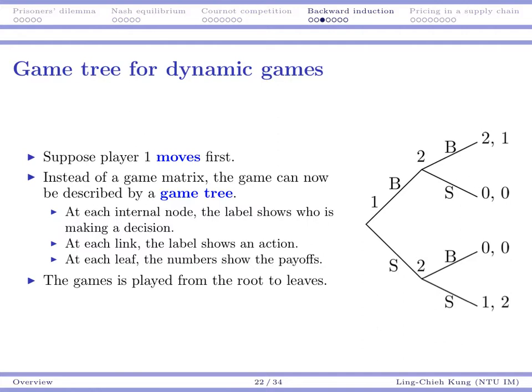So now we need to specify the timing for this game. Let's assume player one makes the decision first, and then player two makes her decision. Now, instead of a matrix, we probably should use a tree to describe this game. The first node or the root is labeled as one. That means player one is to choose between B or S. And then at an internal node here, player two observed that player one chose B.